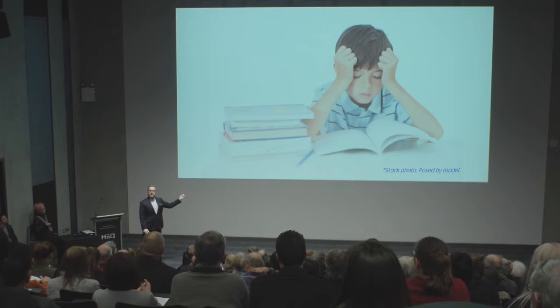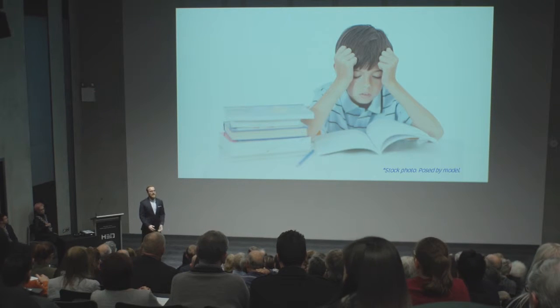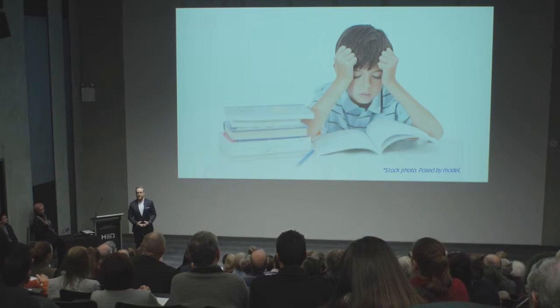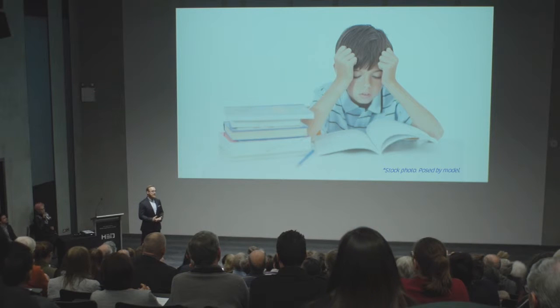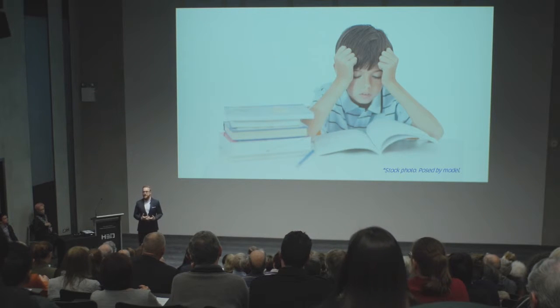Meet Ben. Ben is seven years old and sadly things are not going well for him. He is hyperactive, prone to tantrums, and struggles to follow even simple instructions. Ben doesn't seem to understand the consequences of his actions and he makes the same mistakes over and over again. Ben's behaviour has put him at risk of being suspended from school for a second time and his carers and teachers are at their wits end. They don't know what to do.